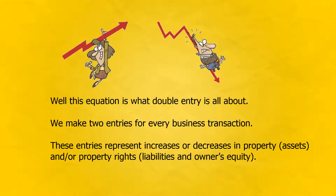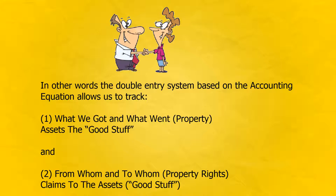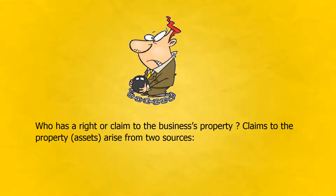We make two entries for every business transaction. These entries represent increases or decreases in property, assets, and/or property rights — liabilities and owner's equity. In other words, the double-entry system based on the accounting equation allows us to track: 1. What we got and what went — property, assets, the good stuff — and 2. From whom and to whom — property rights, claims to the assets, good stuff.